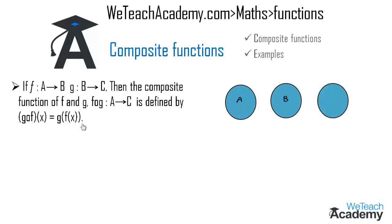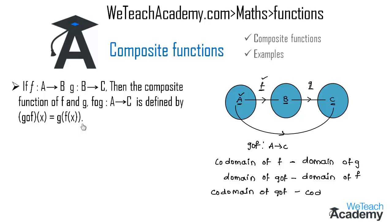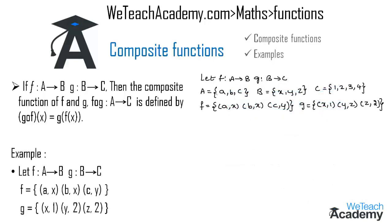Let us consider three Venn diagrams A, B, and C. Here f is a mapping from A to B and g is a mapping from B to C. The composite function g∘f is a mapping from A to C. The co-domain of f, which is B, becomes the domain of g. The domain of g∘f is also the domain of f, and the co-domain of g∘f, that is C, is also the co-domain of g. So g∘f(x) = g(f(x)).